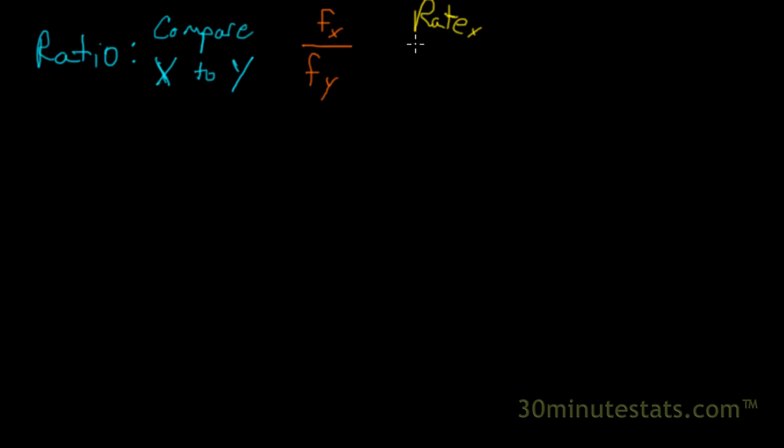And so we'll take the rate for group X and we'll divide it by the rate for group Y. And that will produce our ratio.